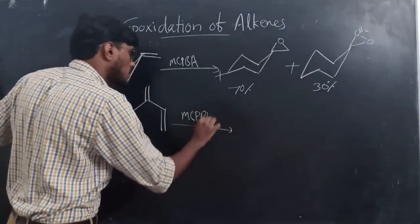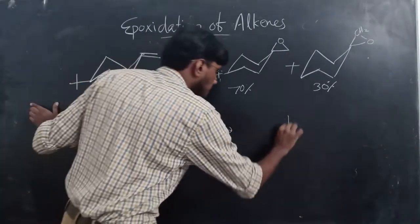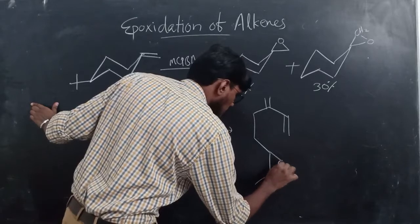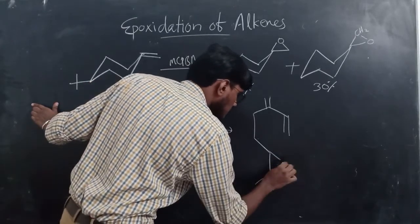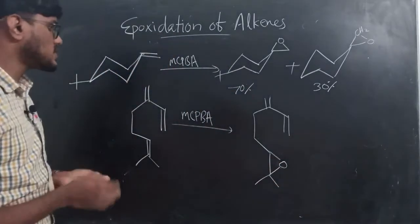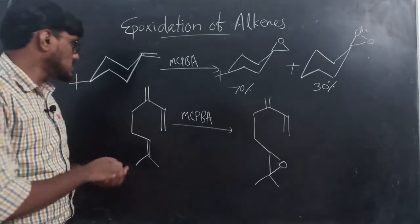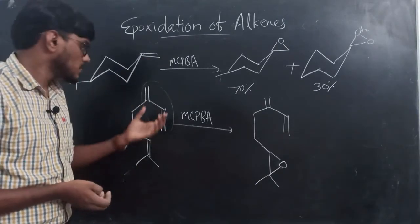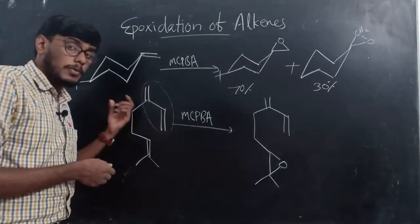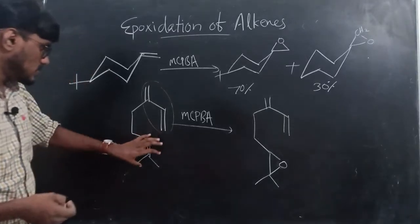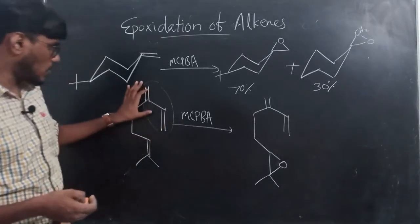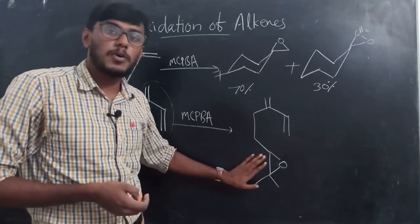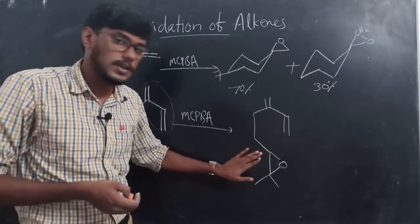Another example: a compound with one isolated double bond and two conjugated double bonds. In epoxidation reactions with peroxy acids, isolated double bonds undergo epoxidation preferentially over conjugated double bonds. So here the isolated double bond reacts with the peroxy acid to form the epoxide product, while the conjugated double bonds remain unreacted.